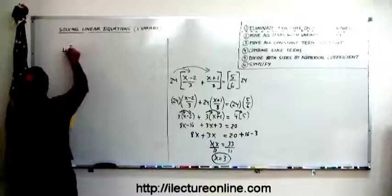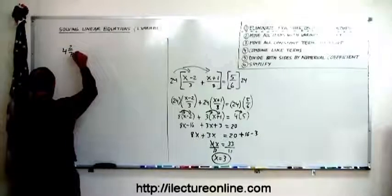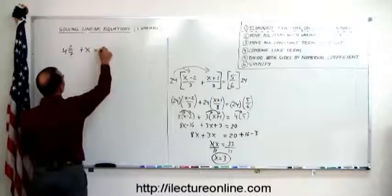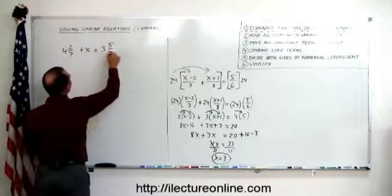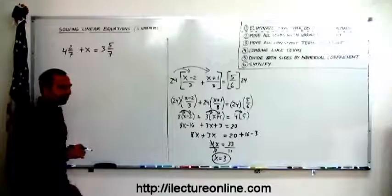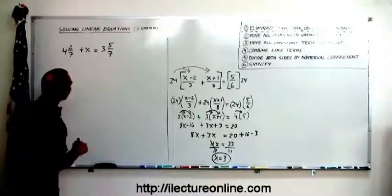4 and 2 sevenths plus x equals 3 and 5 sevenths. What are we dealing with here? Are these fractions? Certainly they are, but they're different kinds of fractions. These are called mixed numbers.